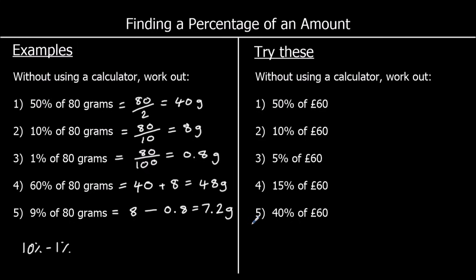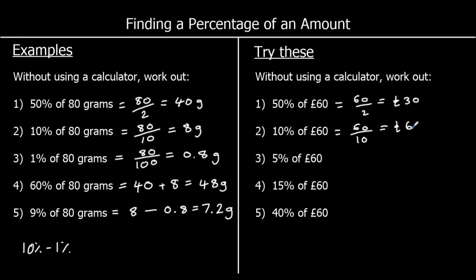Five different questions for you to try, so give these a go. Question 1, 50% of 60 pounds: to find 50%, we half. Half of 60 is 30. Question 2, we're finding 10%. 10% is the same as a tenth. A tenth of 60 is 6.